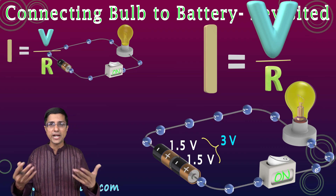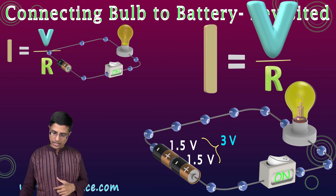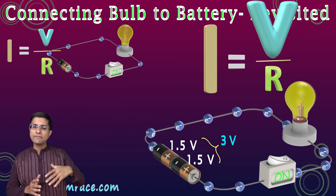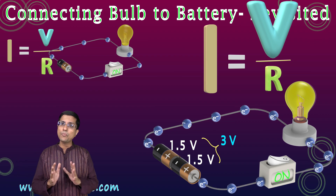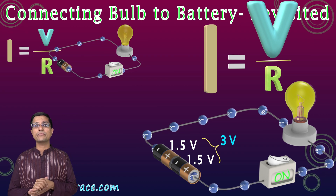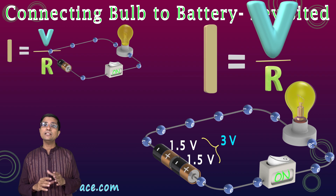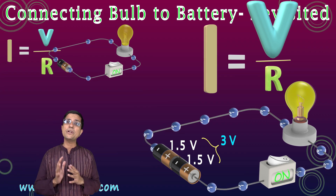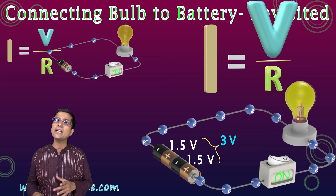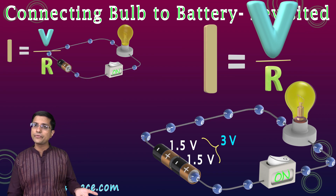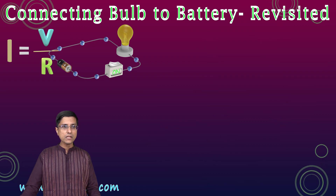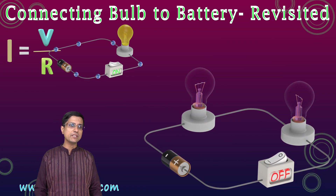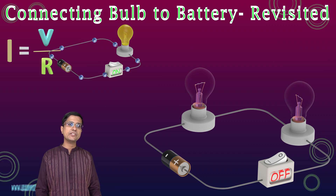If we continue to increase the voltage by adding more batteries, at some point such a large amount of current would flow through the lamp that the heat generated would cause the tungsten filament to burn out completely. We say that the lamp would then fuse.